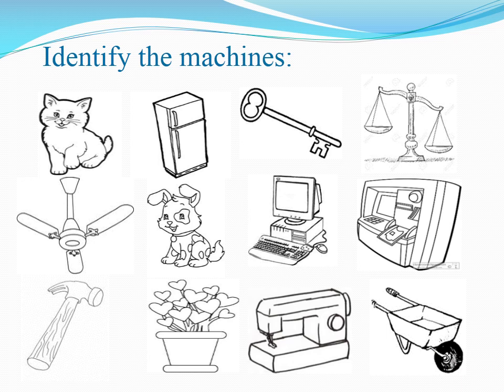Pen — is a Pen a machine or not? Yes! It's also a smart machine. Dog — is a Dog a machine or not? No! Very good! Computer — is a Computer a machine or not? Yes, it's also a smart machine! Very good!